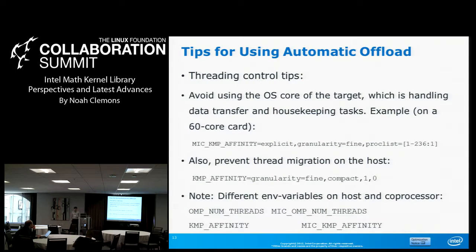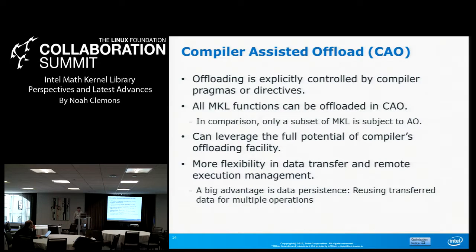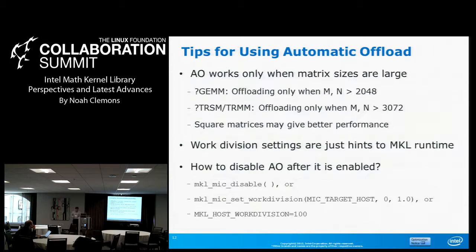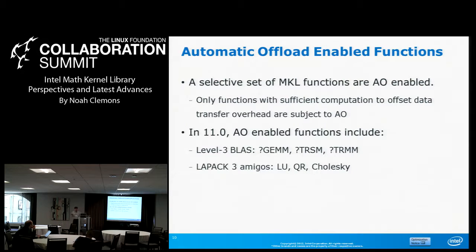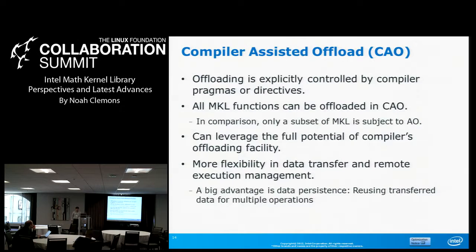Some tips — nothing you need to memorize right now, but things to remember when working with Xeon Phi: always avoid using the operating system core, prevent thread migration on the host, and there are different environment variables on the host and coprocessor to give more flexibility. If you're running an MKL function not from the automatic offload enabled list, or you want to manage the data transfer and execution yourself, you would move to compiler-assisted offload, where you specifically control things via compiler pragmas or directives.